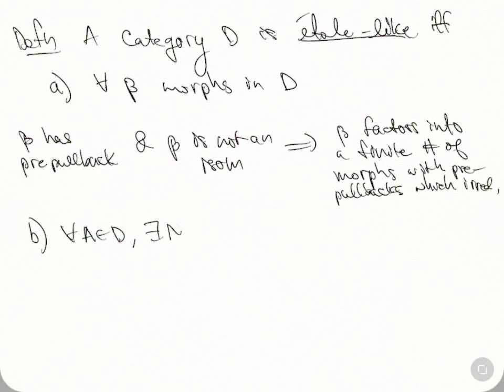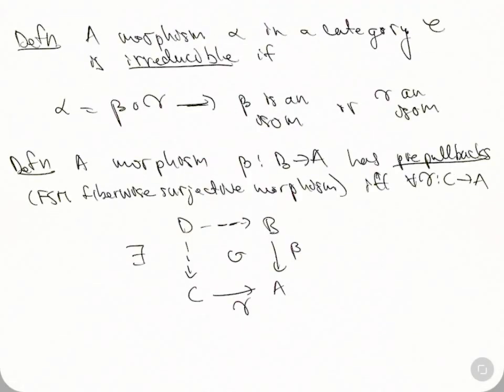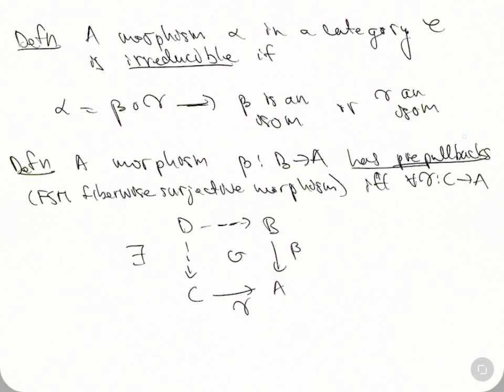there exists some natural number N such that every chain of pre-pullbackable irreducible morphisms starting at A